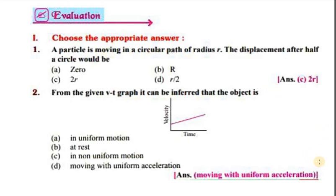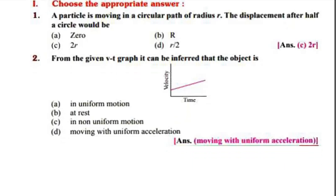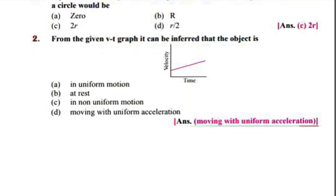A particle is moving in a circular path of radius r. The displacement after one complete circle would be 2r. The circular path displacement is 2r.